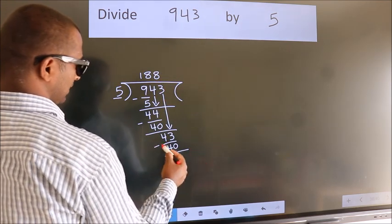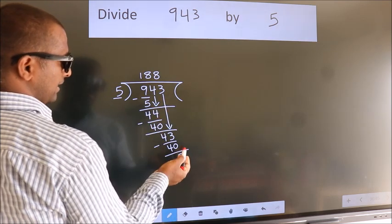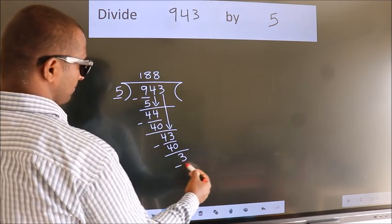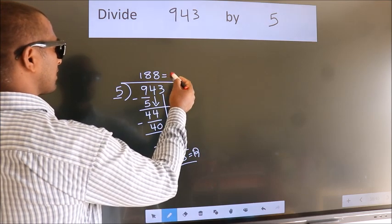Now we subtract. We get 3. No more numbers to bring it down. So, we stop here. This is our remainder. This is our quotient.